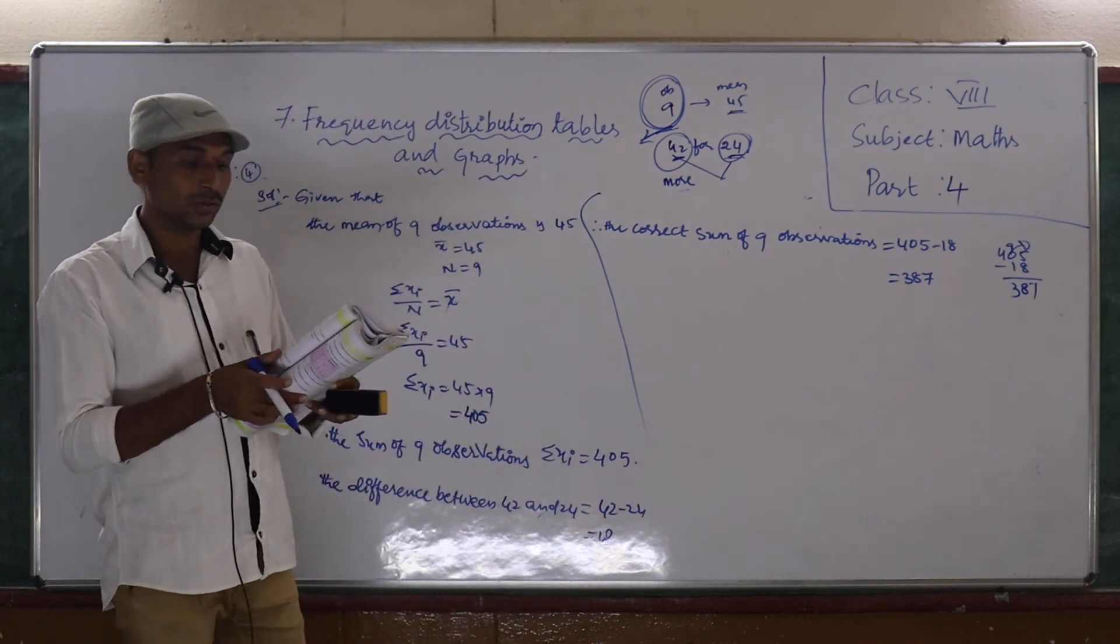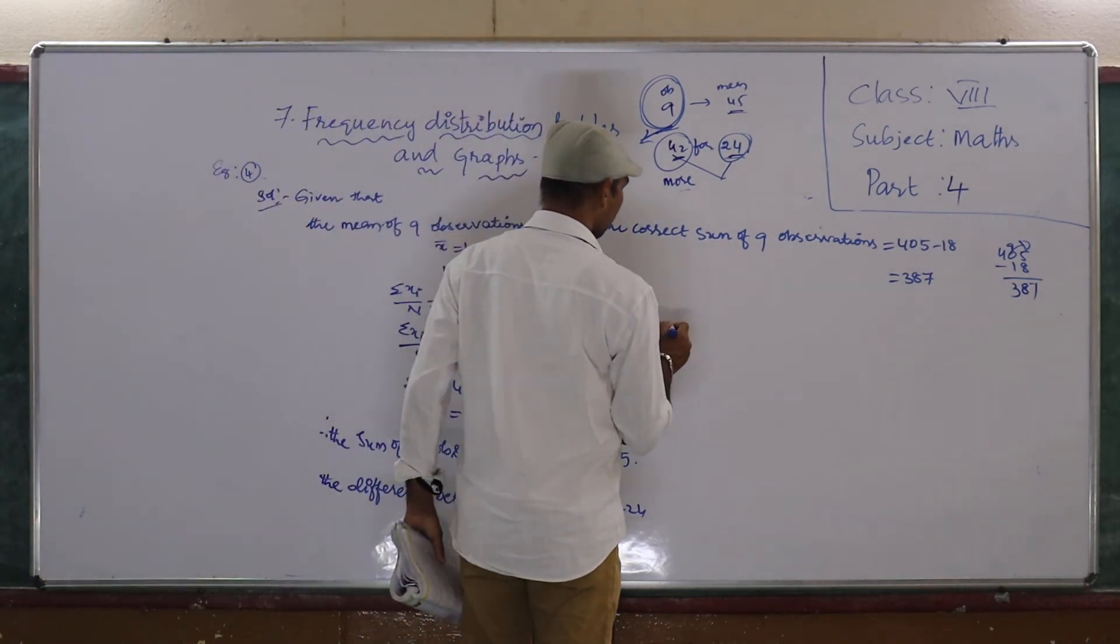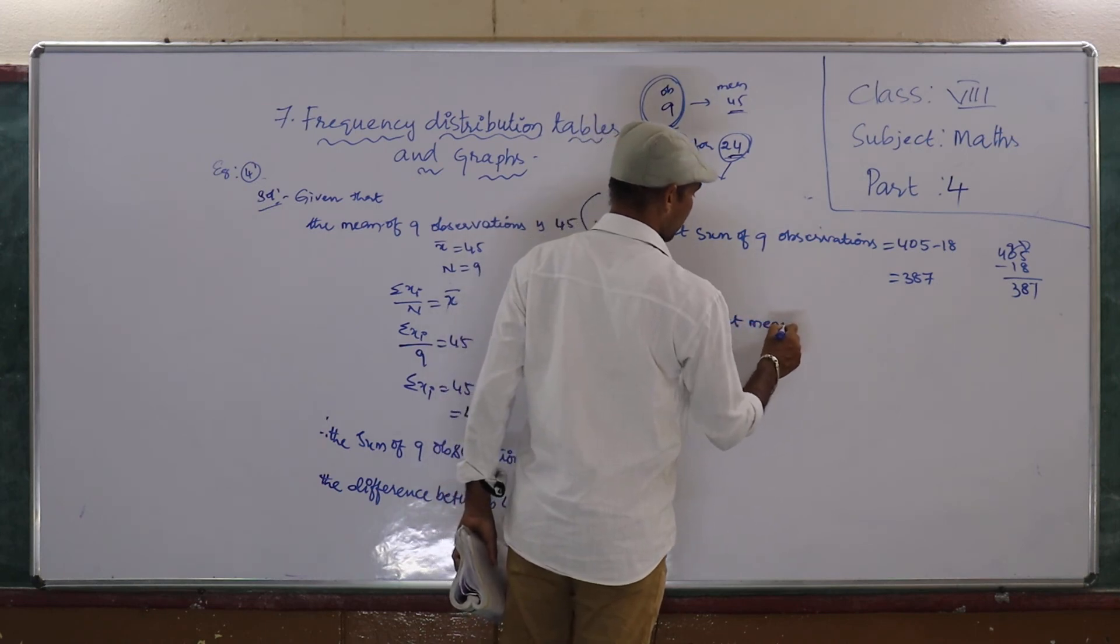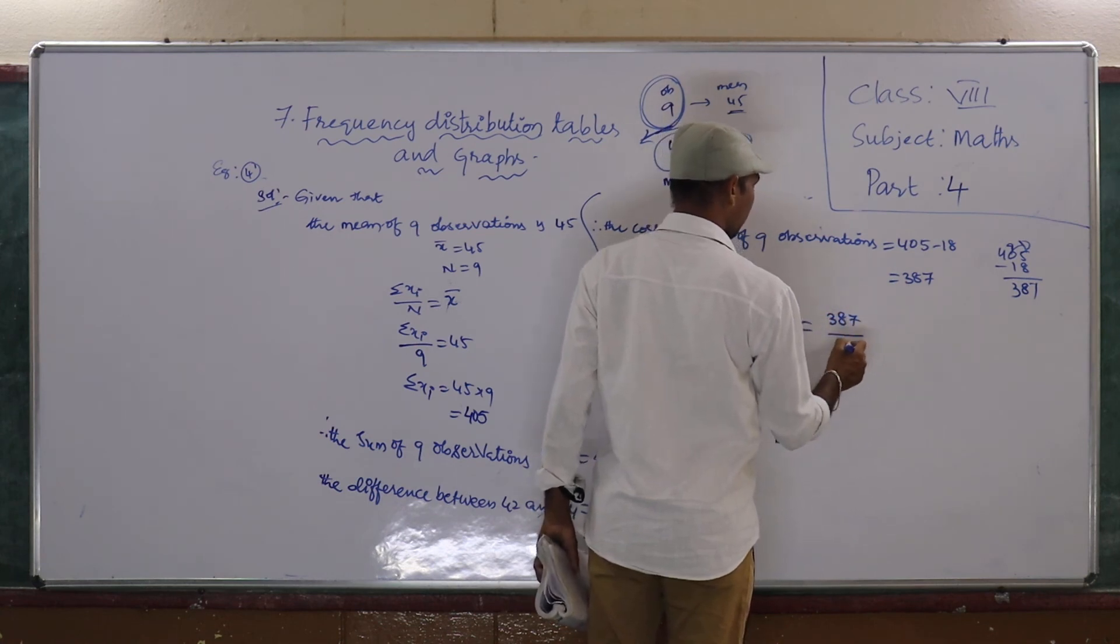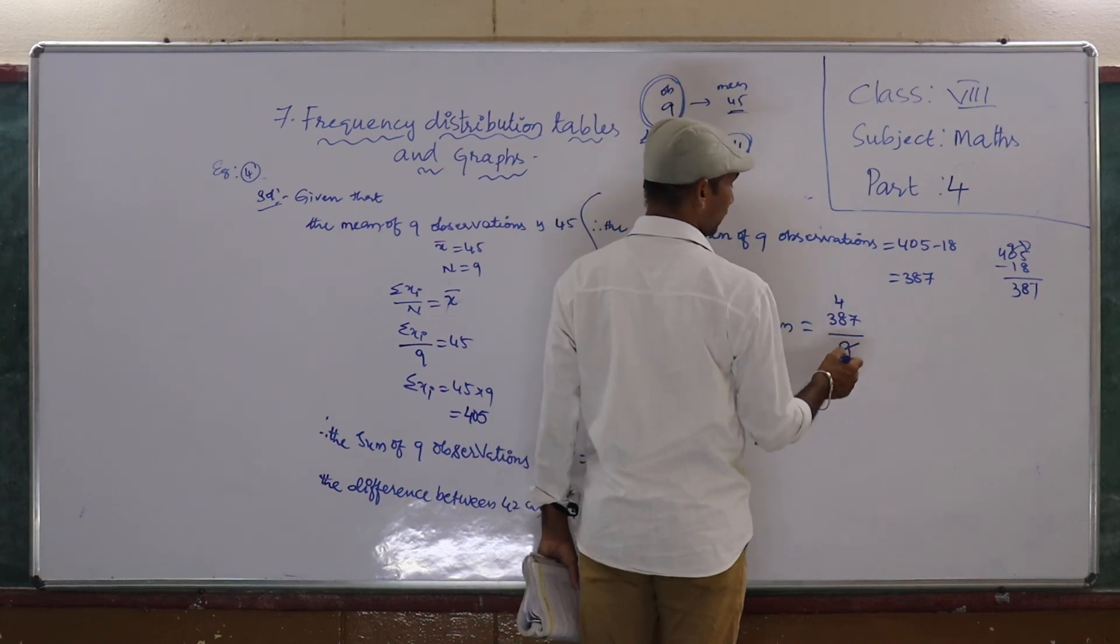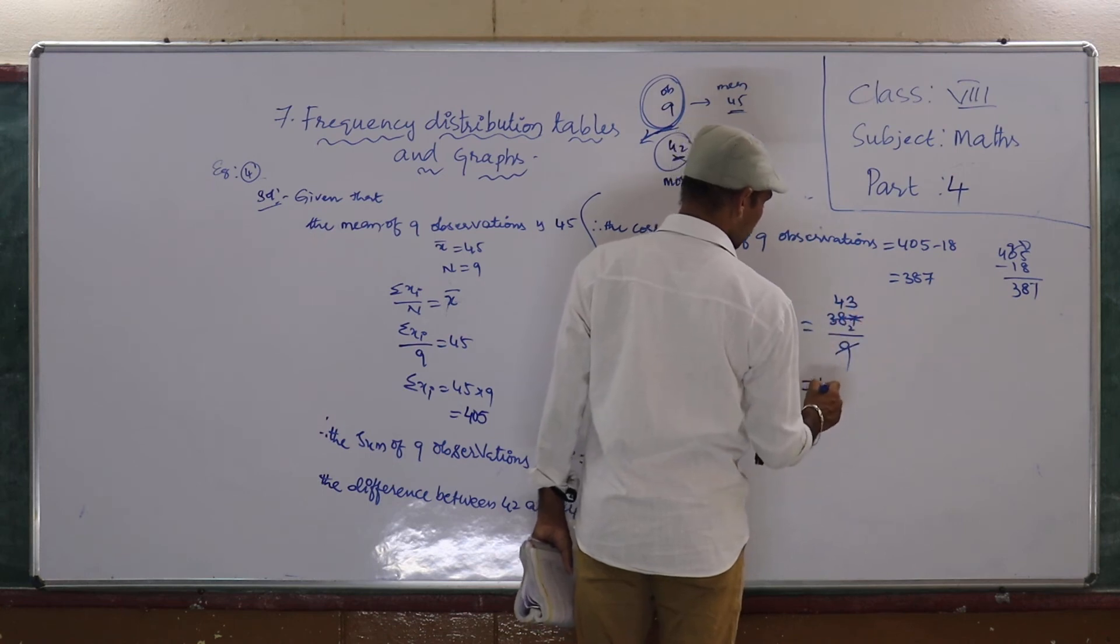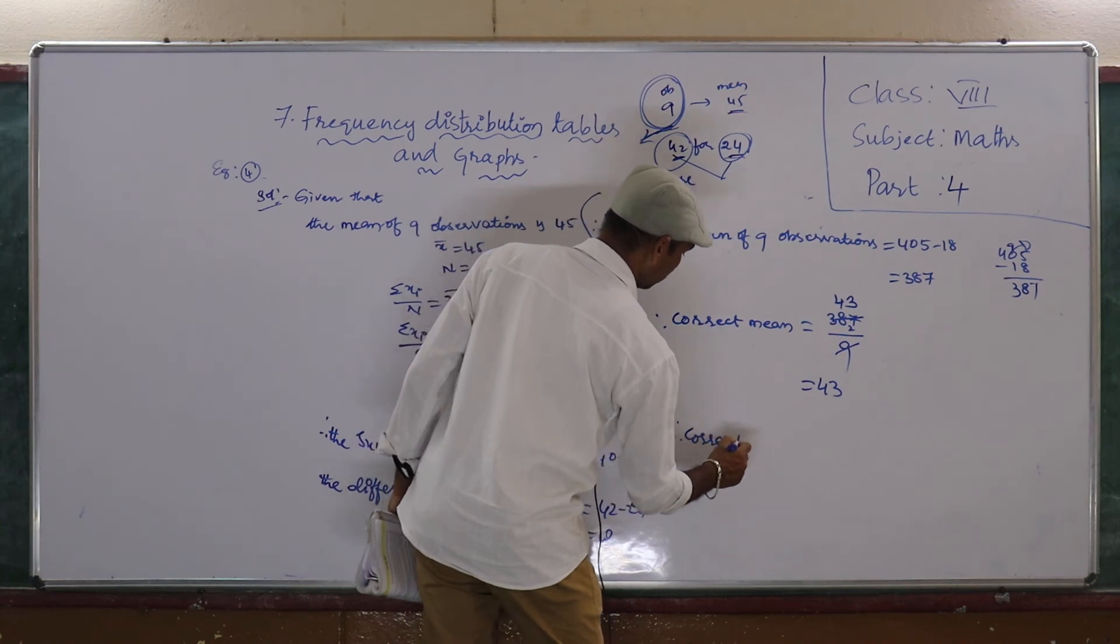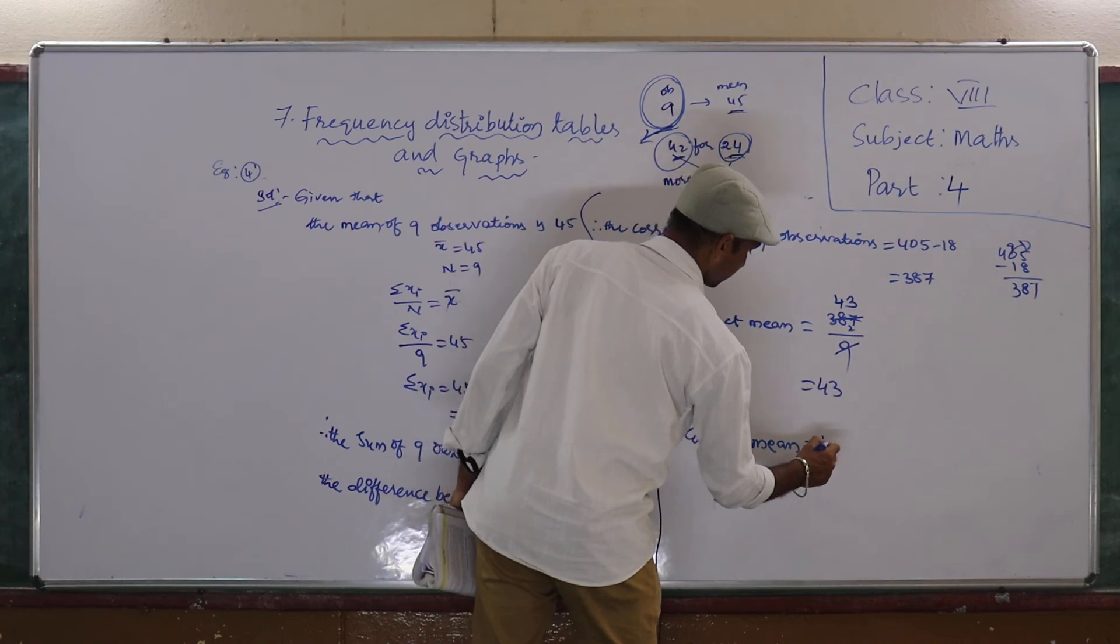Now, what is asking? What would be then the correct mean? Therefore, correct mean is equal to sum of observations by number of observations. 387 by 9. Working through the division, we get 43. Therefore, correct mean is equal to 43.